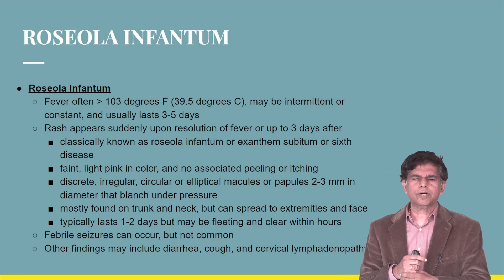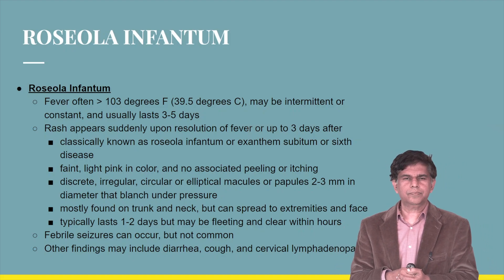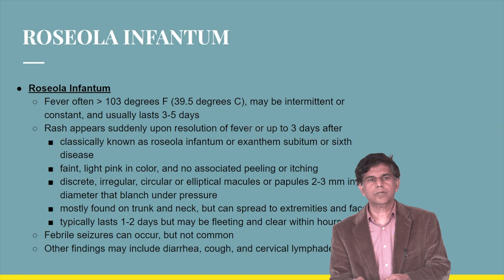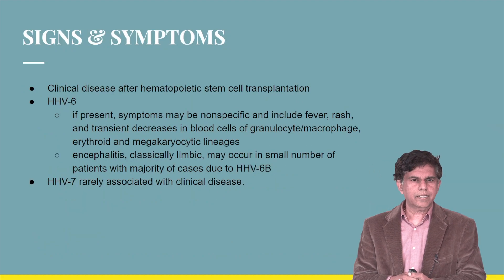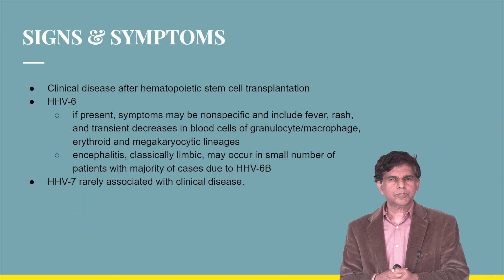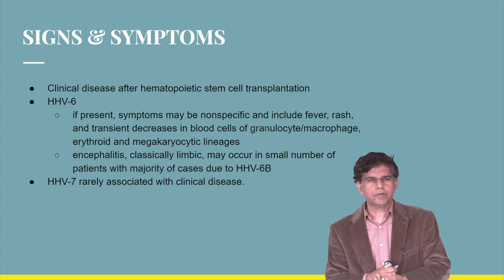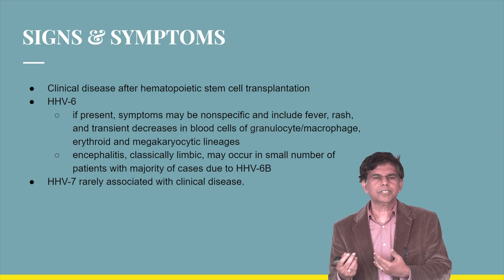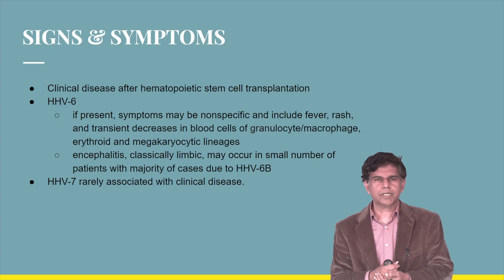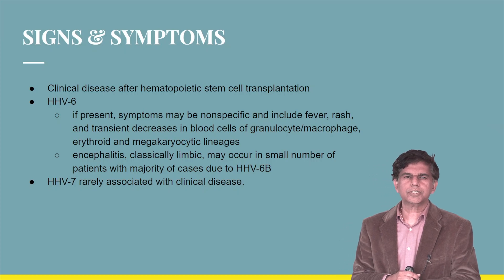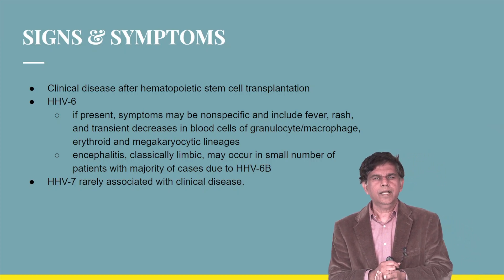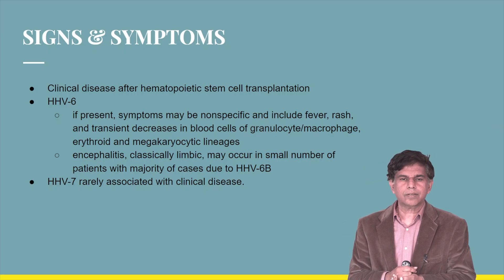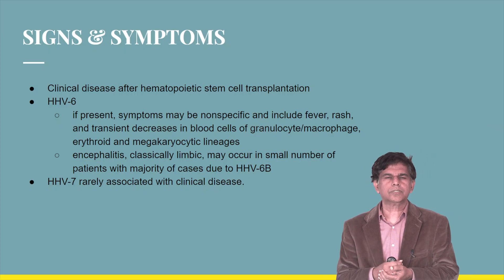Other findings can include diarrhea, cough, and cervical lymphadenopathy. In adults, symptoms may be non-specific, such as fever, rash, and a transient decrease in blood cells of granulocyte, macrophage, erythroid, and megakaryocyte lineages.